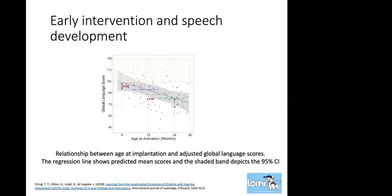In Australia, they are making a very organized effort to identify deafness early, followed by early intervention, and they are trying to get kids implanted at six months of age. I think we're going to probably take a similar approach in the US as well.